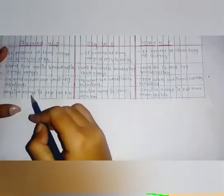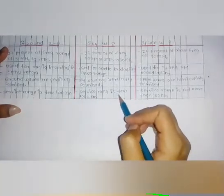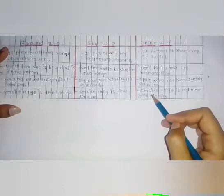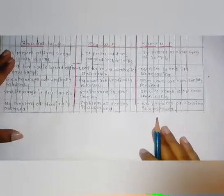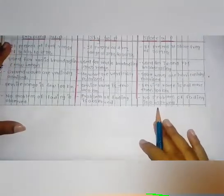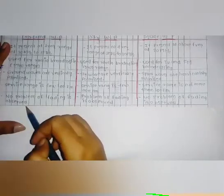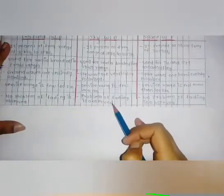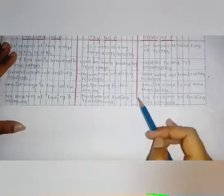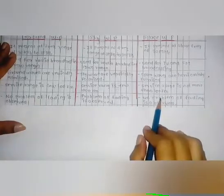Ground wave service range is a few hundred kilometers, sky wave service range is a few thousand kilometers, and space wave service range is not more than 100 km. Regarding fading: no problem of fading is observed in ground wave; problem of fading is observed in sky wave; and no problem of fading is observed in space wave. Ground wave and space wave are the same in this regard.